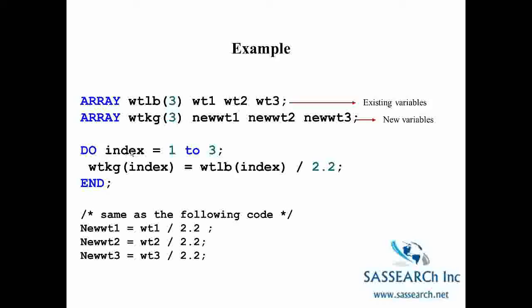So index is actually going to be a variable that will be on your output data set. The first time through the loop, index will be equal to one. The next statement will take the first variable in the array weight kilogram, which is actually the variable new weight one,